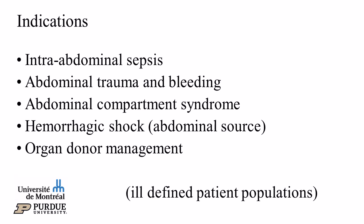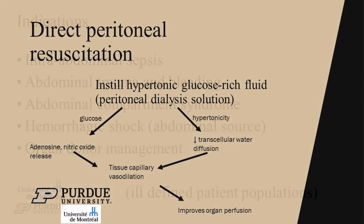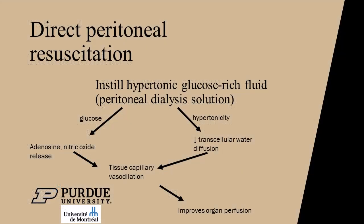Direct peritoneal resuscitation has also been used with abdominal sepsis, abdominal compartment syndrome, or to manage organ damage. It involves IP instillation of a solution containing dextrose and electrolytes, typically a peritoneal dialysis solution.